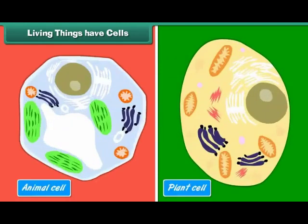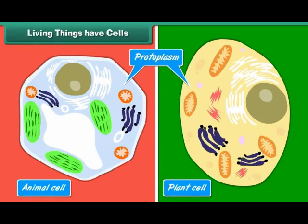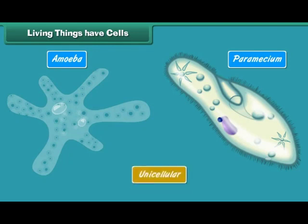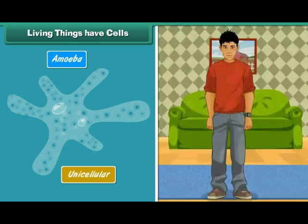Cells are made of protoplasm, or living matter. All the body functions and properties of life are due to protoplasm. Some living organisms like amoeba and paramecium are made up of one cell — they are called unicellular. Organisms made up of many cells are called multicellular.